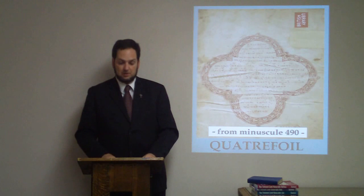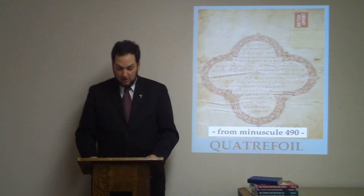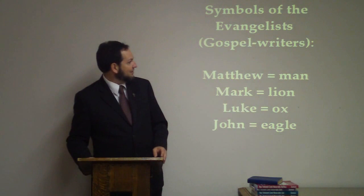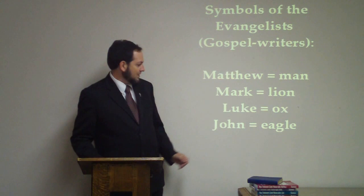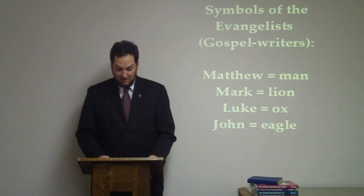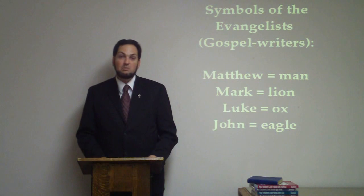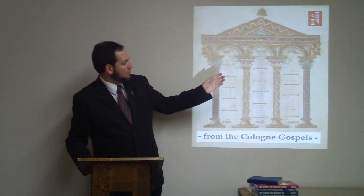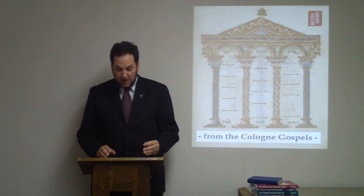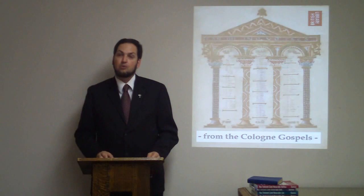In deluxe manuscripts, it is not unusual to see decorations in the Eusebian Canons in which the symbols for the evangelists are used. Matthew is the man, Mark is the lion, Luke is the ox, and John is the eagle — at least, that's what they usually are. The canon tables are often framed by columns on each side with an arch above them. Sometimes instead of arches, there is a roof. These features seem intended to convey that as the reader approaches the Gospels, the reader is spiritually entering a temple, or a cathedral, or a royal palace.